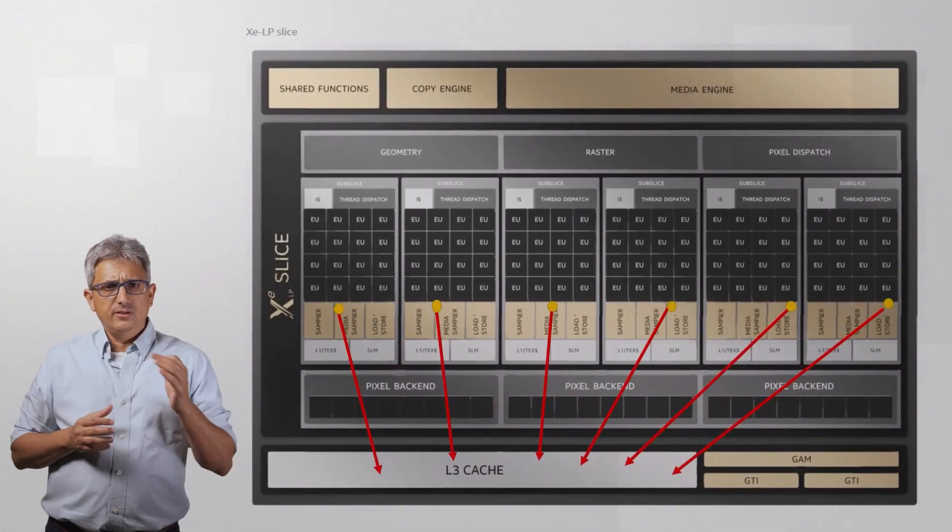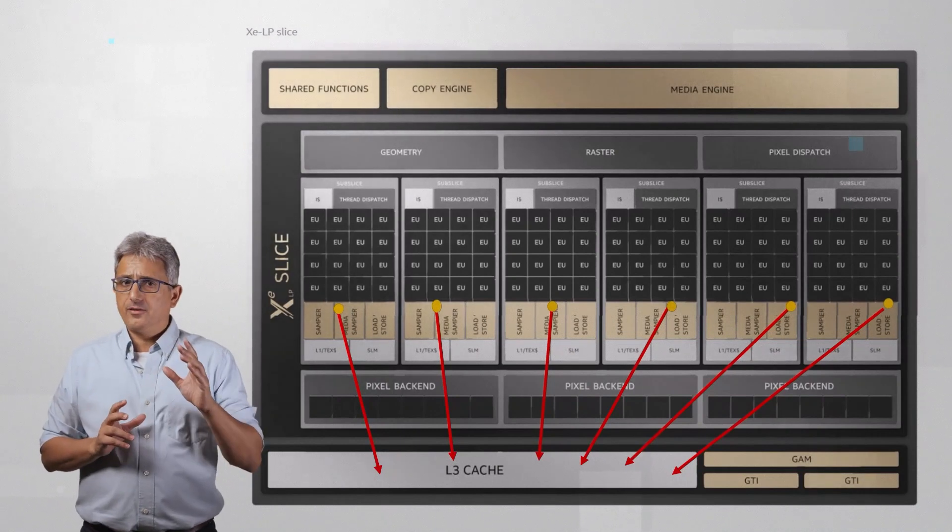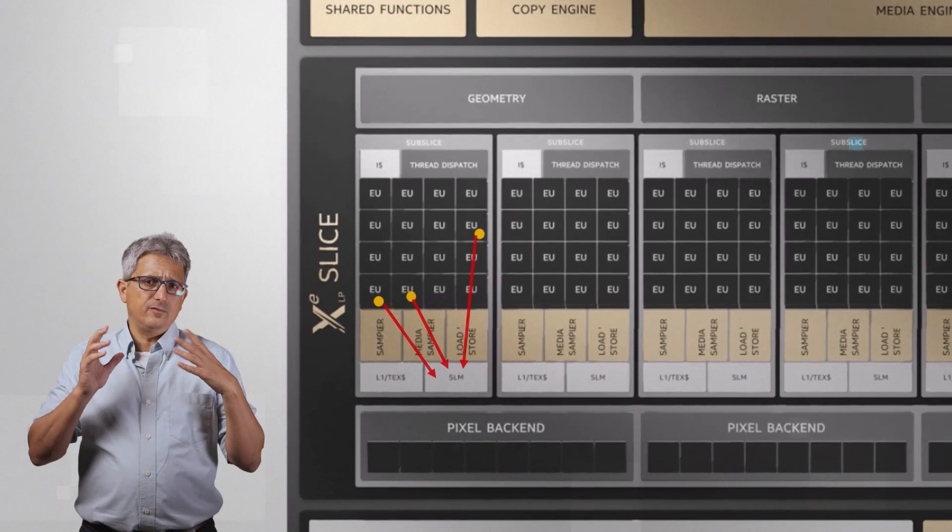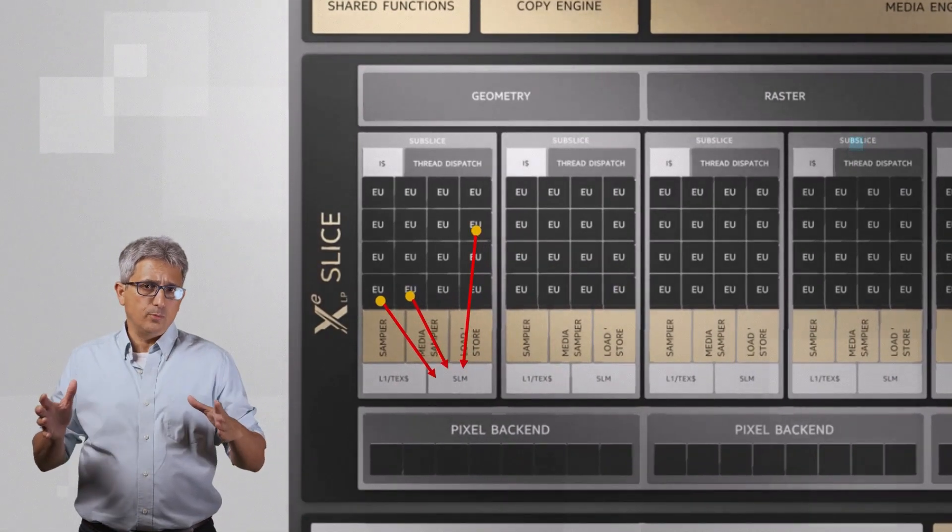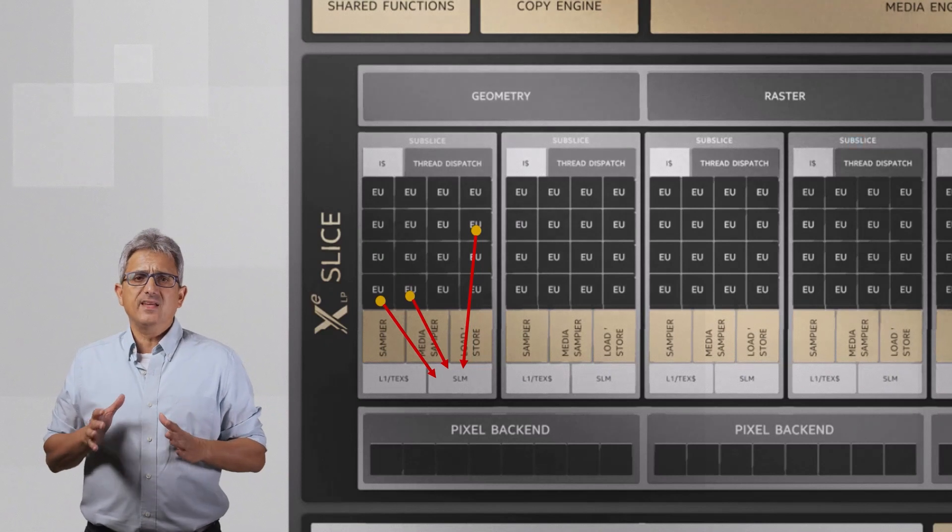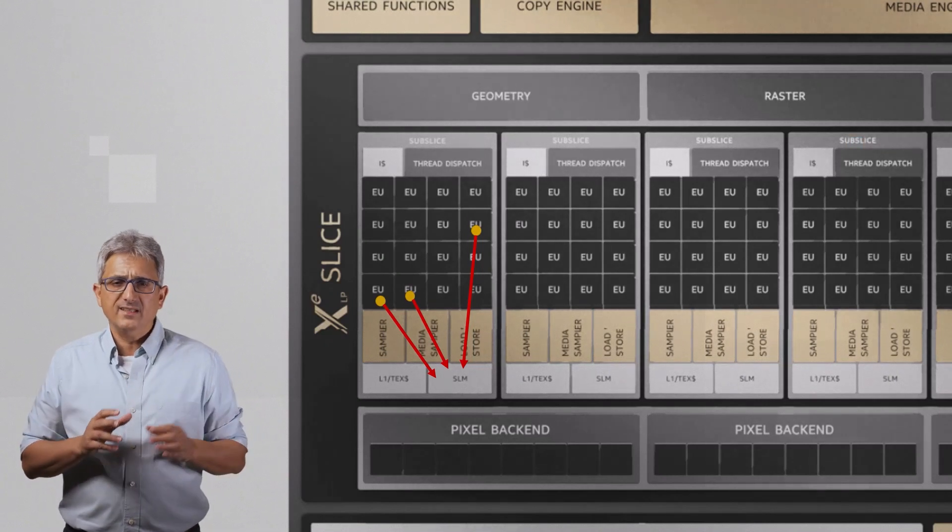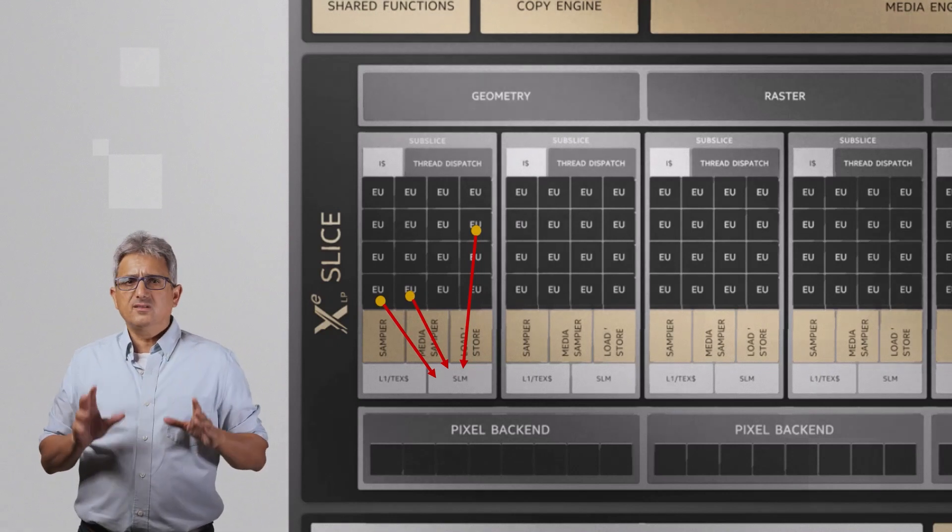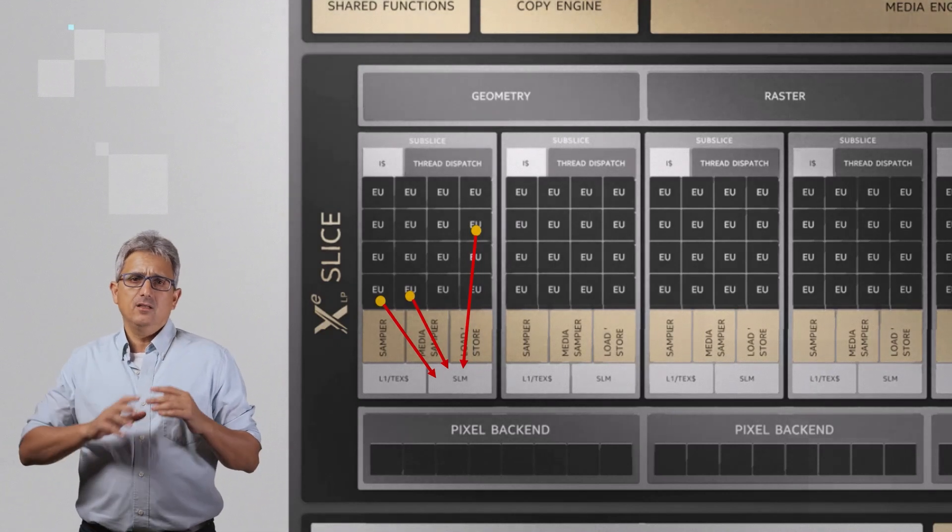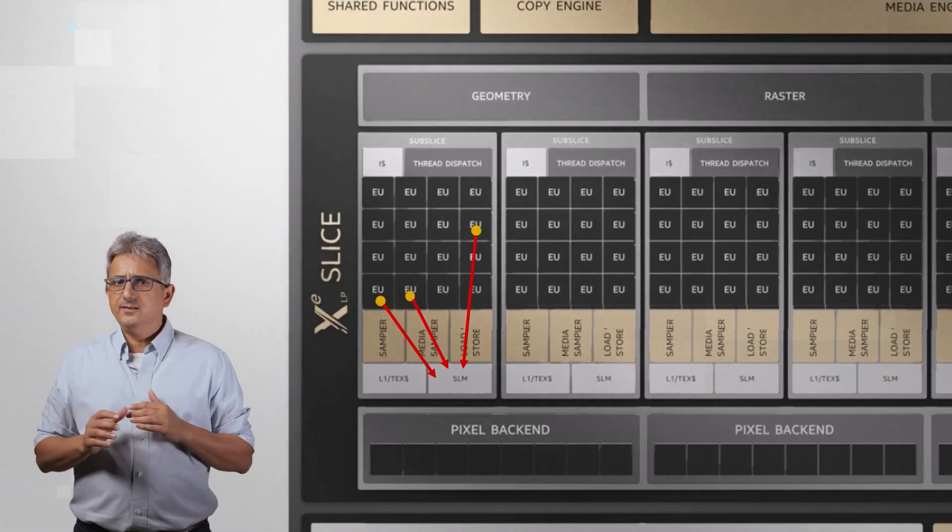Work items running on different subslices will have to communicate via the L3 cache. So I can define a work group. A work group of 64 for example means that each 64 of my work items will run on the same subslice and can communicate via the SLM and have the same thread dispatch and so on.